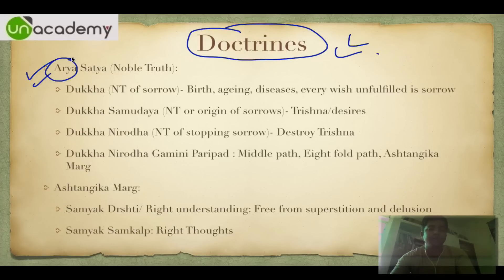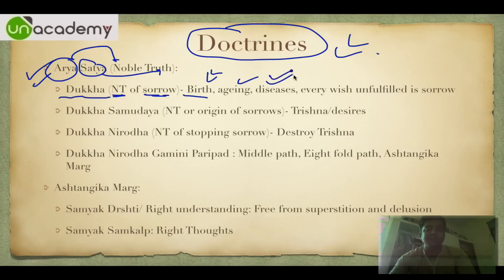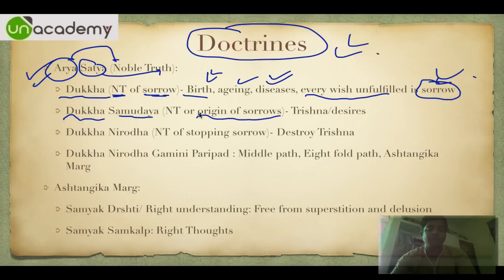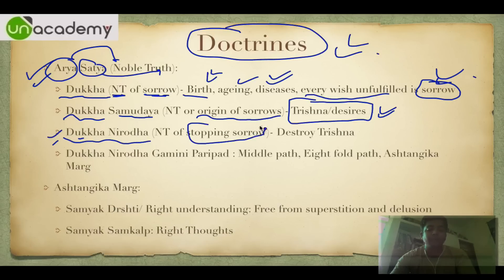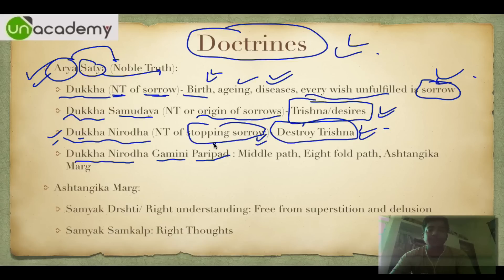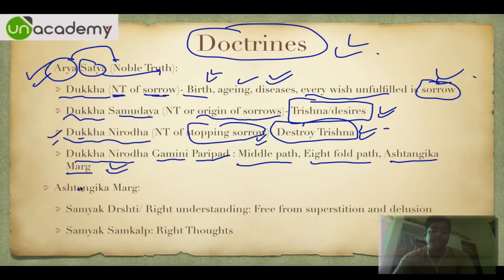His doctrines, which are asked frequently, start with Arya Satya — Arya means noble, Satya means truth. The first is Dukha: the noble truth of sorrow — birth, aging, disease, death, and every unfulfilled wish leads to sorrow. Second is Dukha Samudaya: the noble truth of the origin of sorrow, which arises from Trishna (desire). Third is Dukha Nirodha: the noble truth of stopping sorrow — destroy Trishna. Fourth is Dukha Nirodha Gamini Paripad: the way to lead your life to get rid of sorrow, called the Middle Path, Eightfold Path, or Ashtangika Marg.